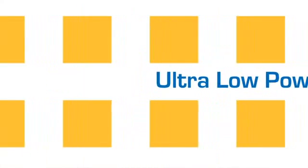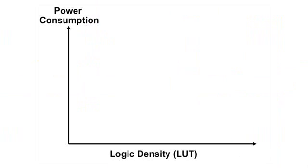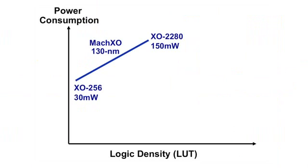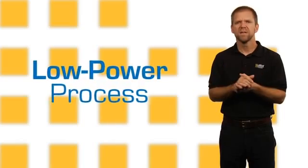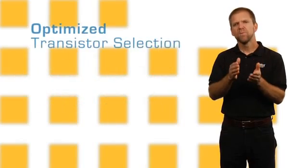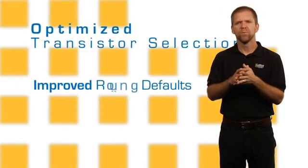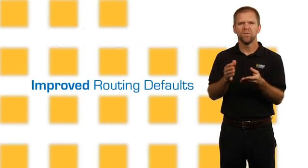Architecting PLDs for low power presents some serious challenges, including thermal management and system reliability. We designed the Mach XO2 family to deliver the maximum functionality at extremely low power. The power advantage is achieved by using a low-power process, optimized transistor selection, and improved routing defaults and algorithms in the software.